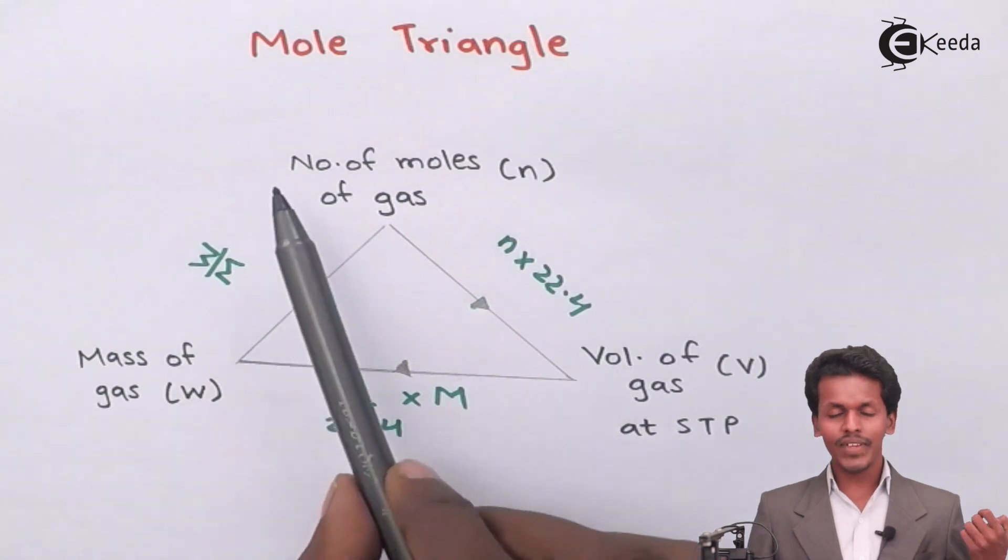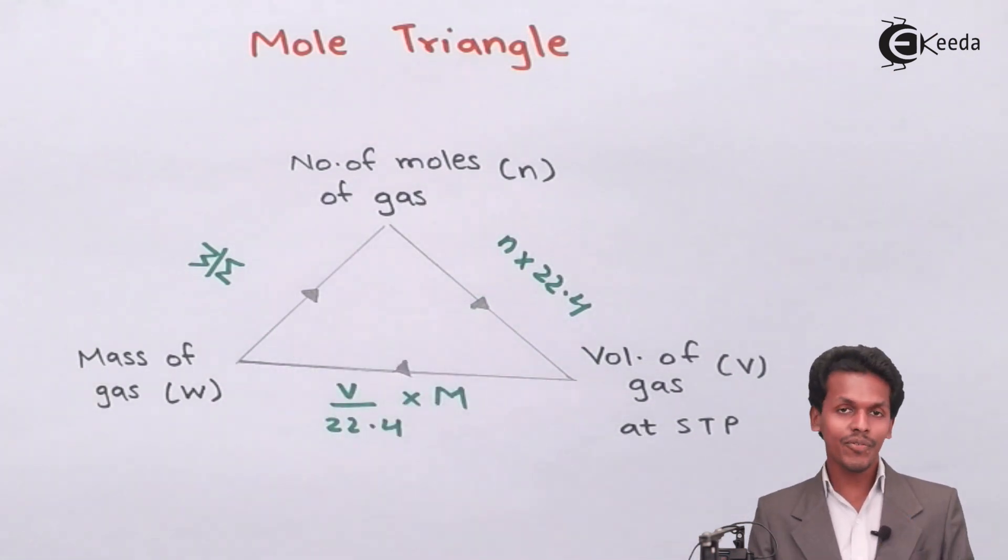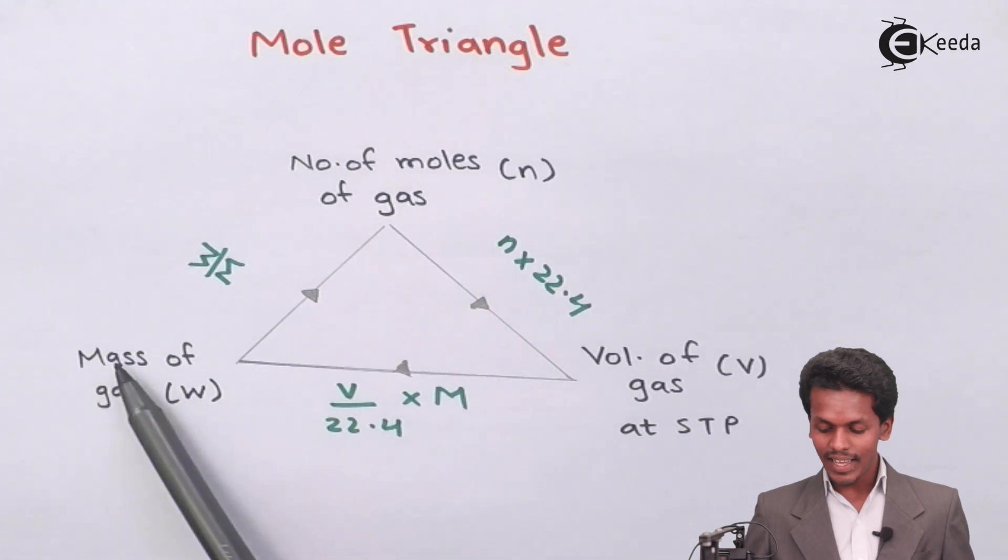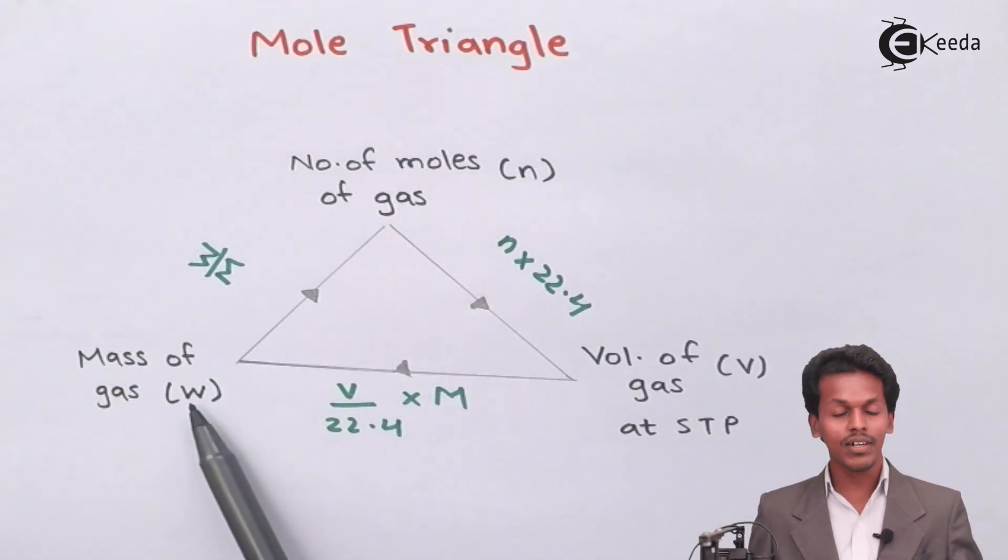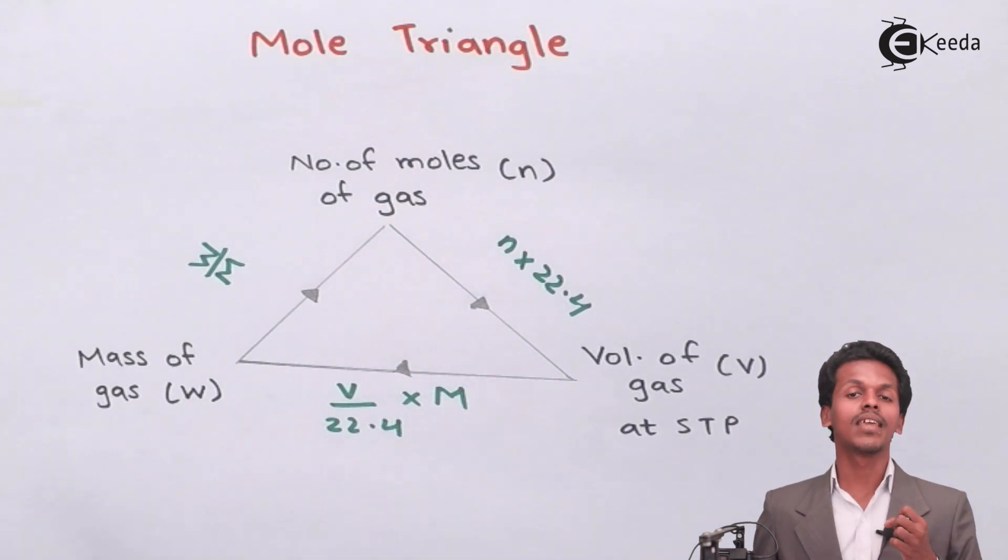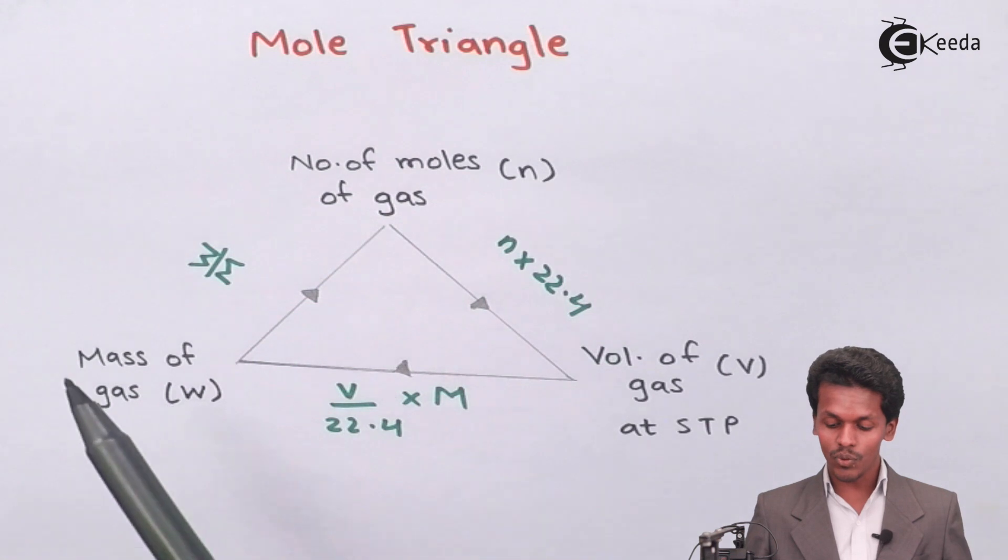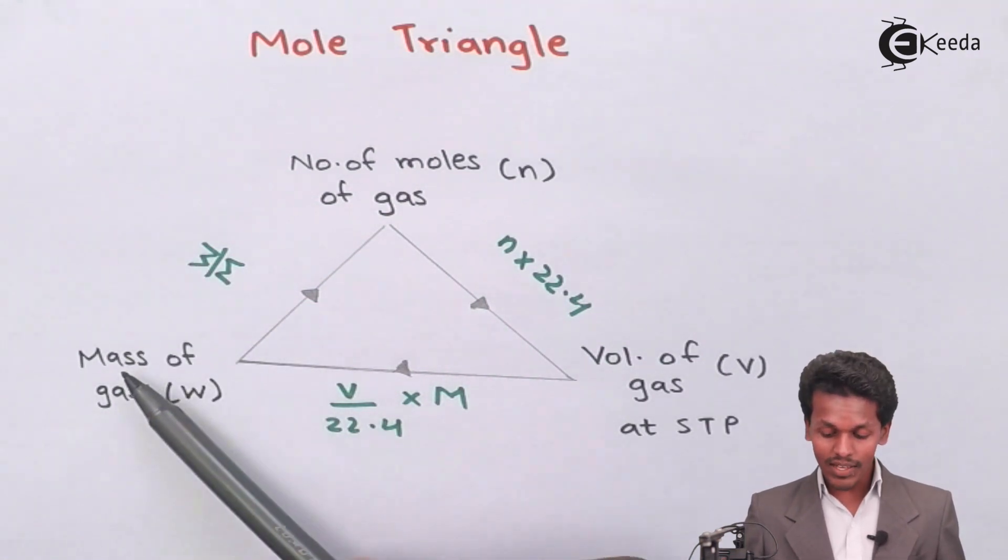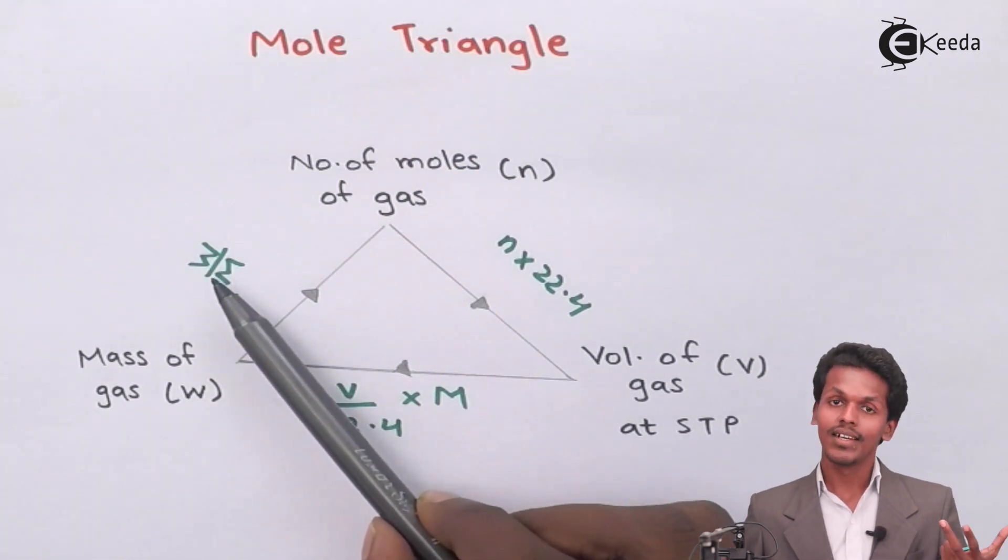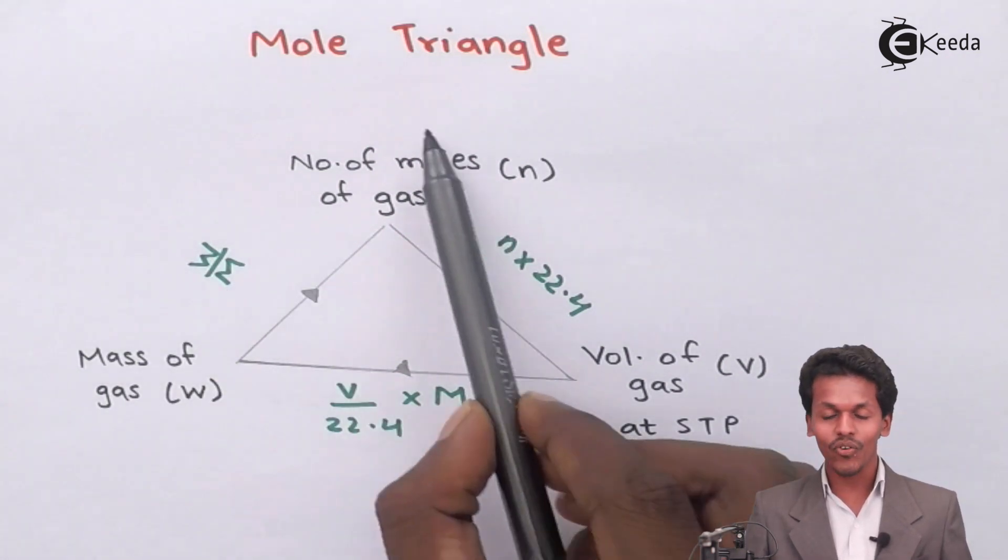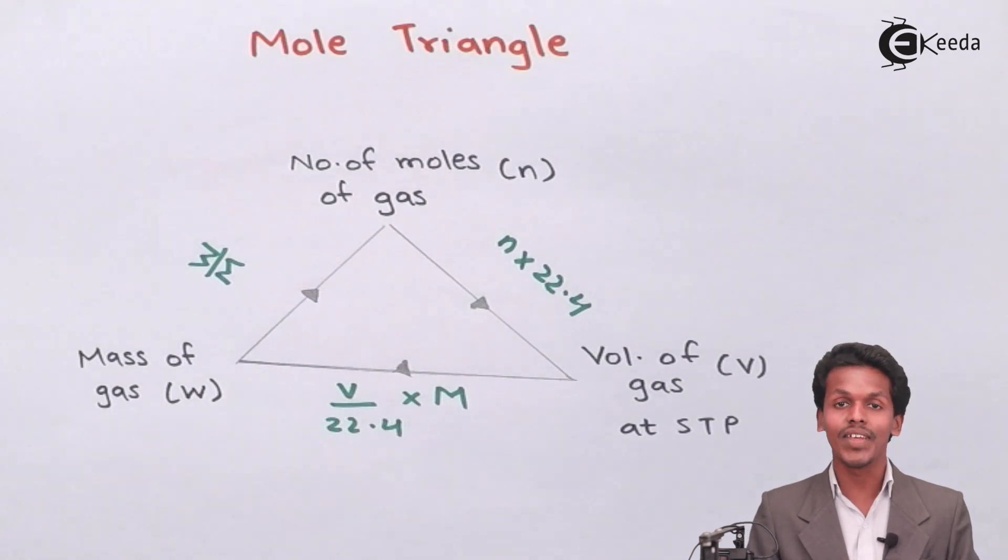Suppose we have to calculate the number of moles. You have to take this point, the mass of the gas, which is W. We express the mass in W format. Then you divide by molecular weight M. Therefore, the mass of the gas W divided by molar mass of the gas M will give you the number of moles n. Quite easy.